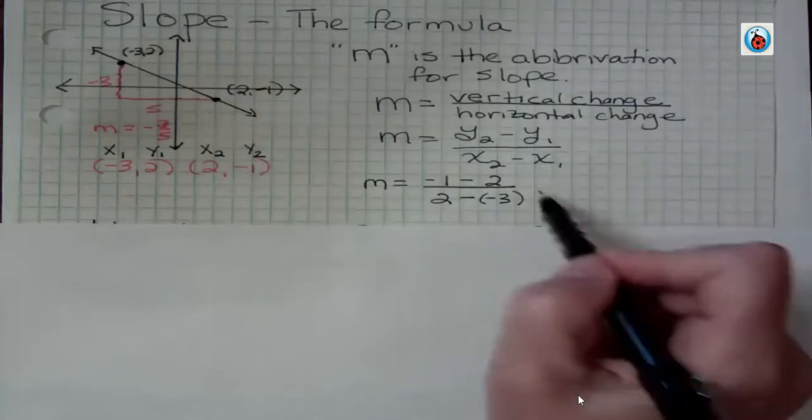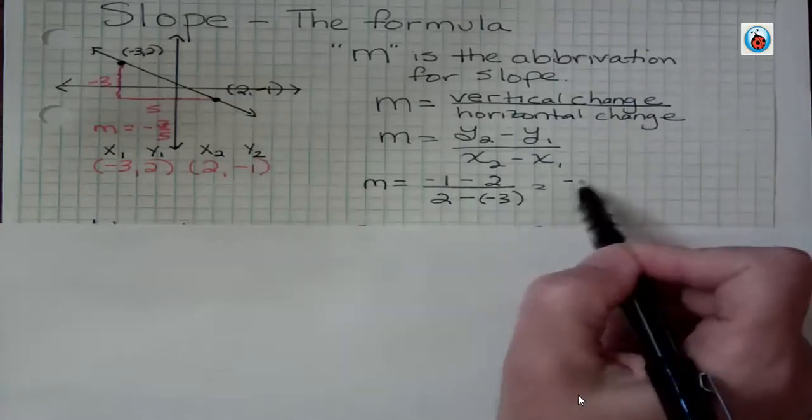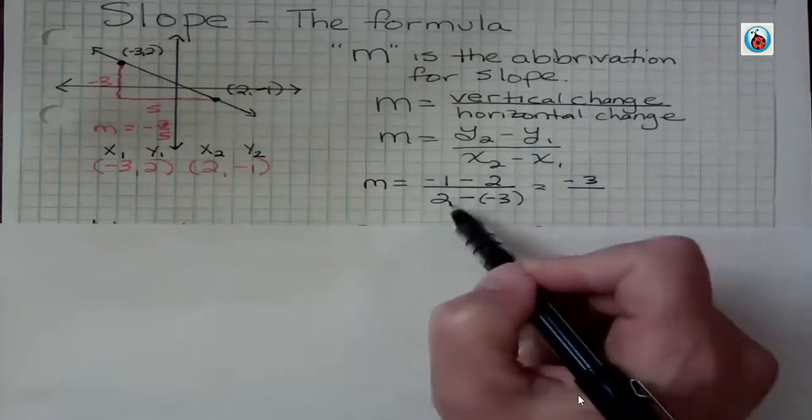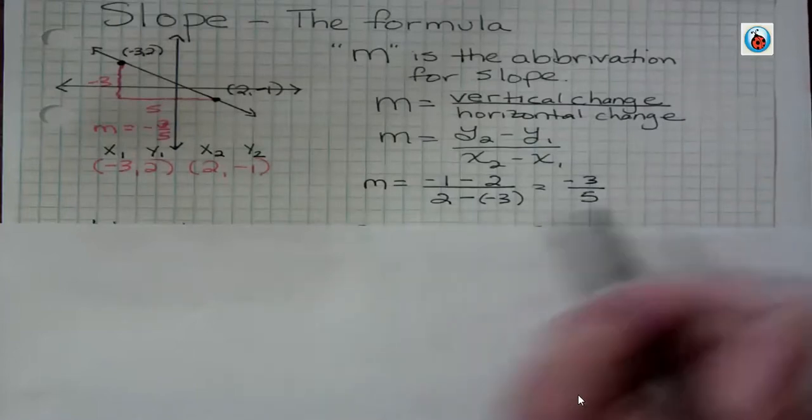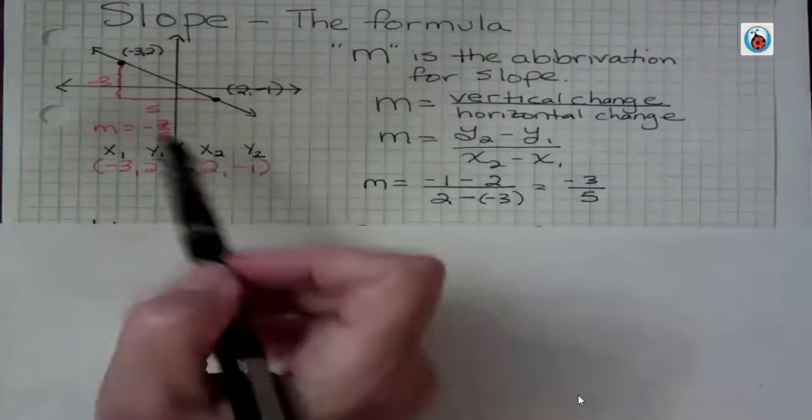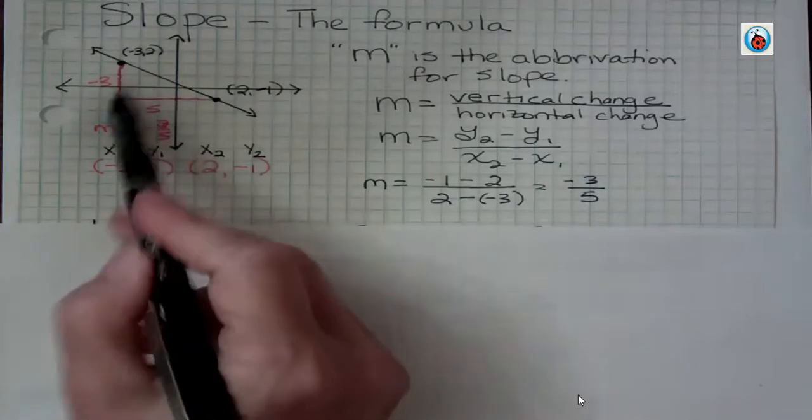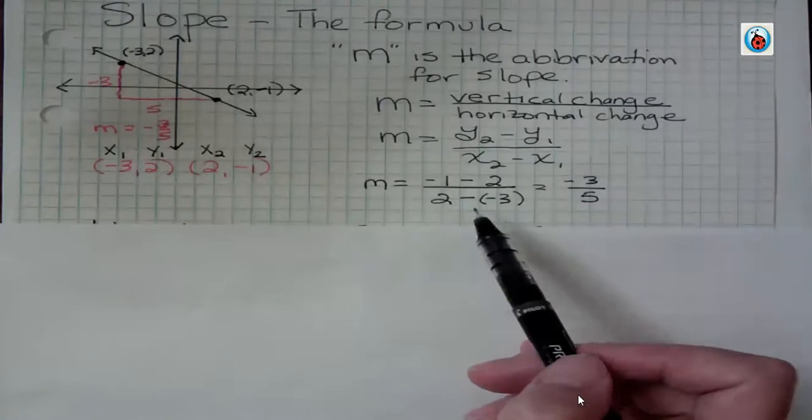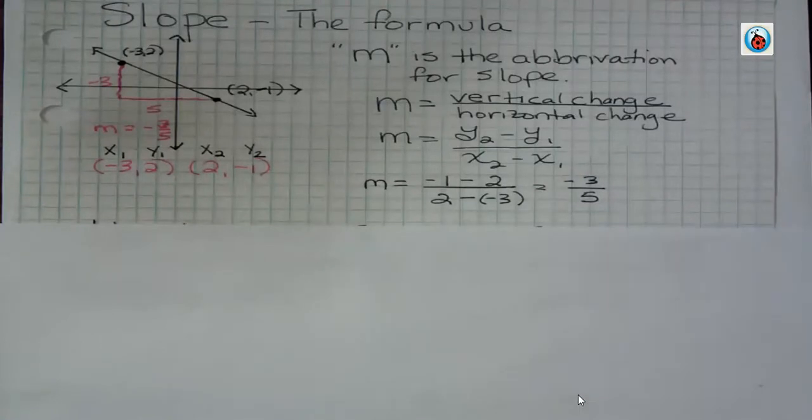What happens here, negative one minus two, that's negative three. And two minus a negative three is two plus three, or five. So slope is negative three fifths. That's what we saw by counting the difference, but we can also find the difference by using subtraction. So it's a way to find the slope without having to draw and count.